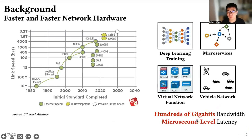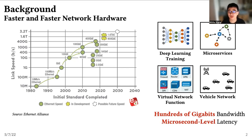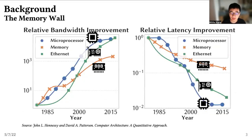As we all observe, in recent years, fast-evolving data-intensive workloads such as deep learning model training, micro-service back-ends of large online platforms, and virtual network functions encourage the rapid improvement of network hardware. Now, in-host networking has hundreds of gigabytes-scale bandwidths and microseconds-level latency. The fast-increasing networking speed significantly impacts the architecture of in-host hardware.